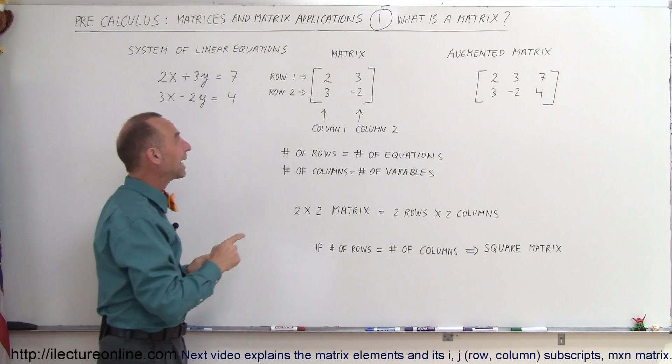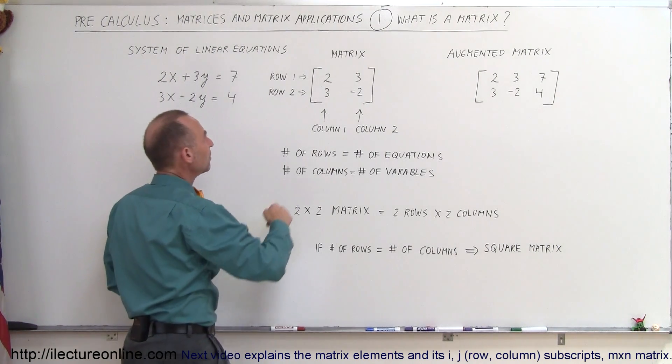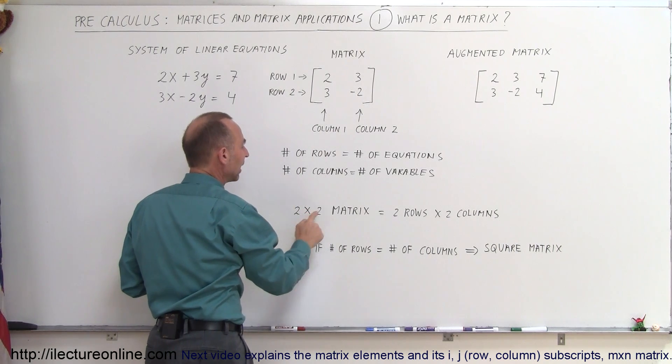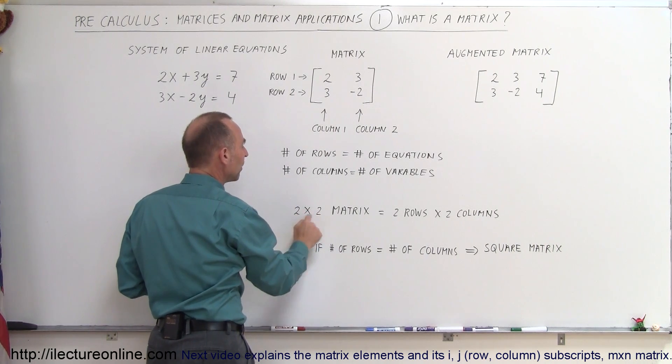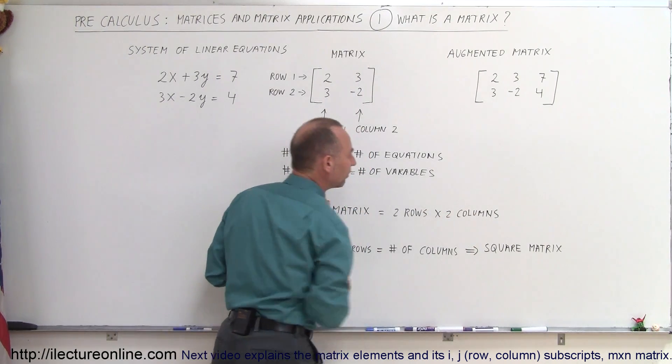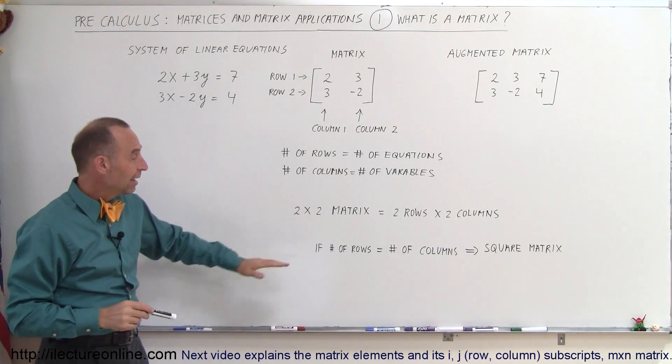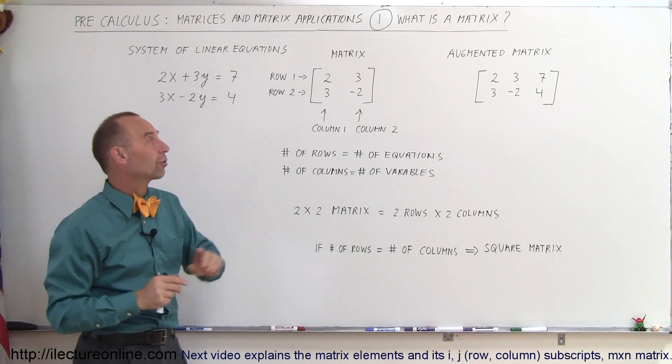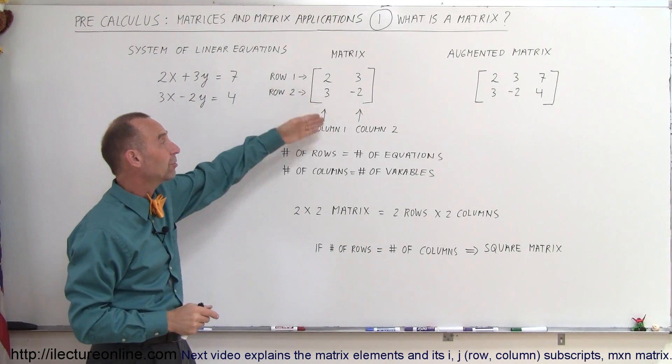Also notice that this is called a 2 by 2 matrix. It means there are two rows and two columns. The rows come first and then the columns come second. A 2 by 2 matrix is equal to a 2 row matrix and a 2 column matrix. Finally, if the number of rows equal the number of columns, we call that a square matrix. This is an example of a square matrix.